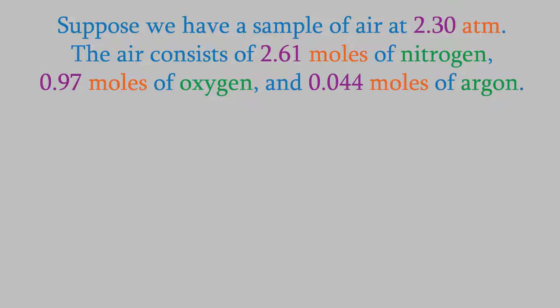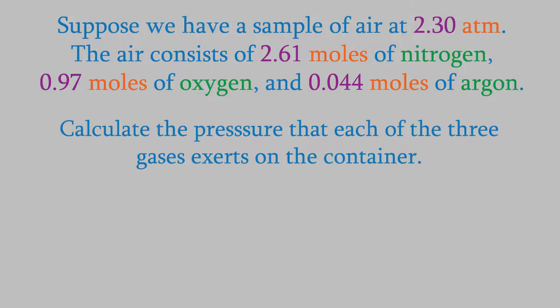The air consists of 2.61 moles of nitrogen, 0.97 moles of oxygen, and 0.044 moles of argon. Those three gases really are the three main ingredients of air, although air has lots of other gases in much smaller amounts, including CO2 and water vapor. Now, let's calculate the pressure that each of those three gases exerts on the container.